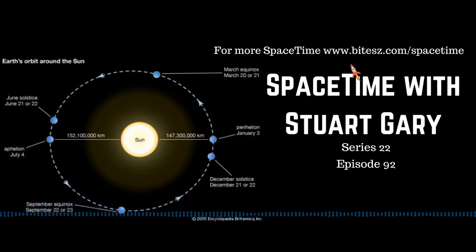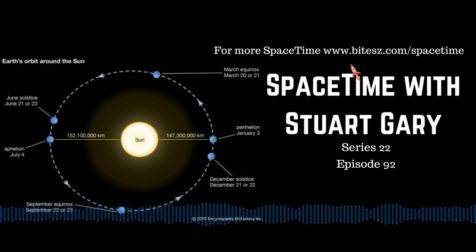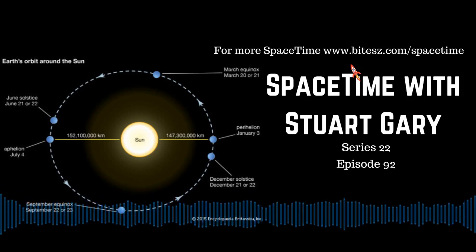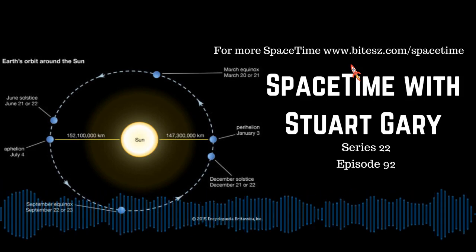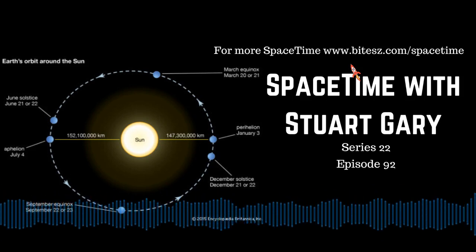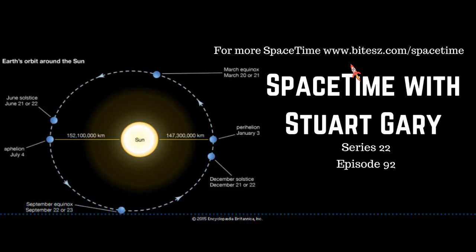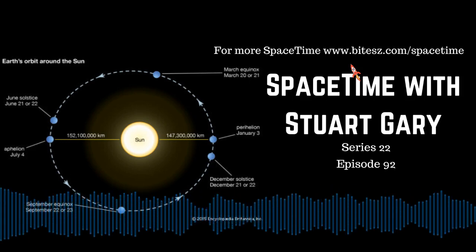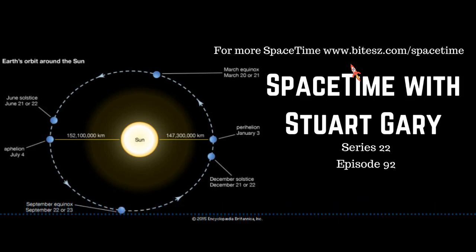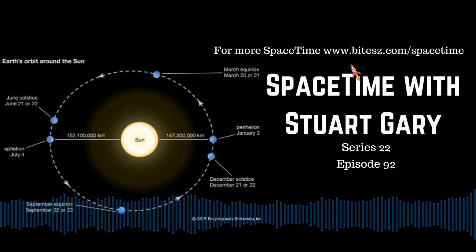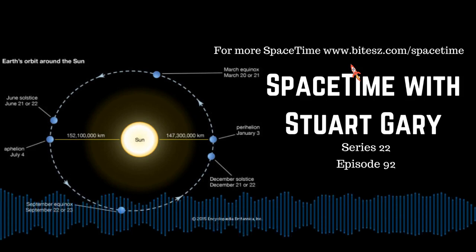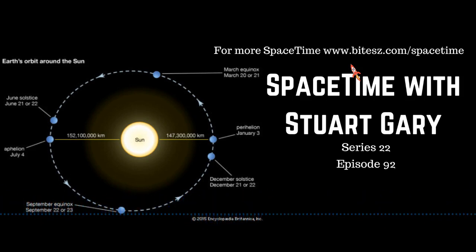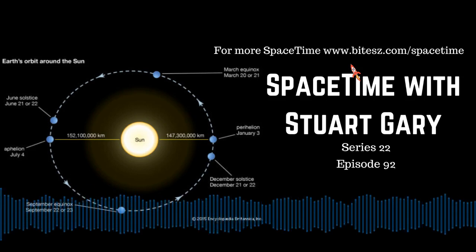Let's start our tour of the night skies in the west, where midway up from the horizon is Fomalhaut, the brightest star in the constellation Pisces Austrinus, the southern fish. Fomalhaut is a young, white, spectral type A main sequence star about 1.8 times the diameter of the sun, located about 25 light years away. A light year is about 10 trillion kilometres — the distance a photon can travel in a year at 300,000 kilometres per second, the speed of light in a vacuum. In 2008, astronomers detected planets orbiting around Fomalhaut.